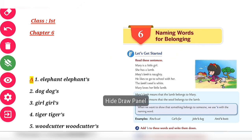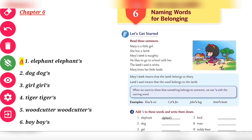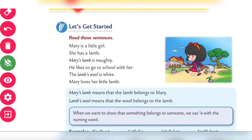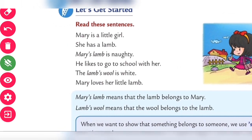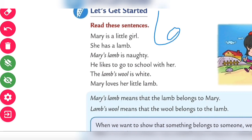Please take out your book, page number 28. Let's get started. Read these sentences: first line — Mary is a little girl, she has a lamb. Mary's lamb is naughty. The thing belonging to Mary is the lamb.